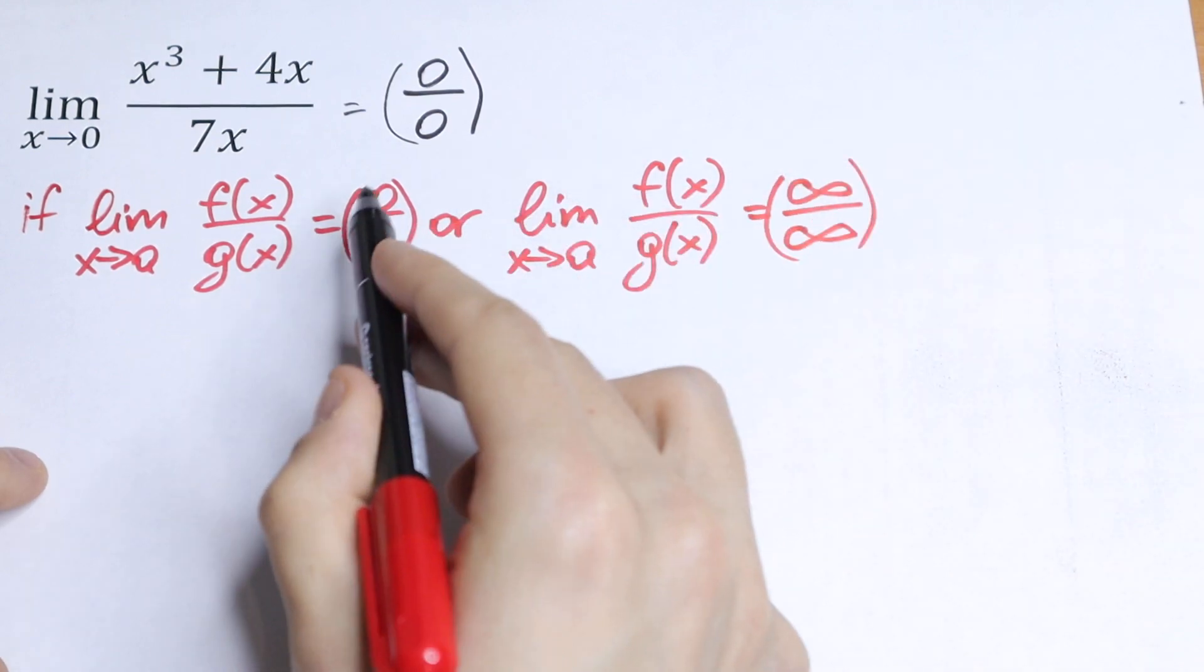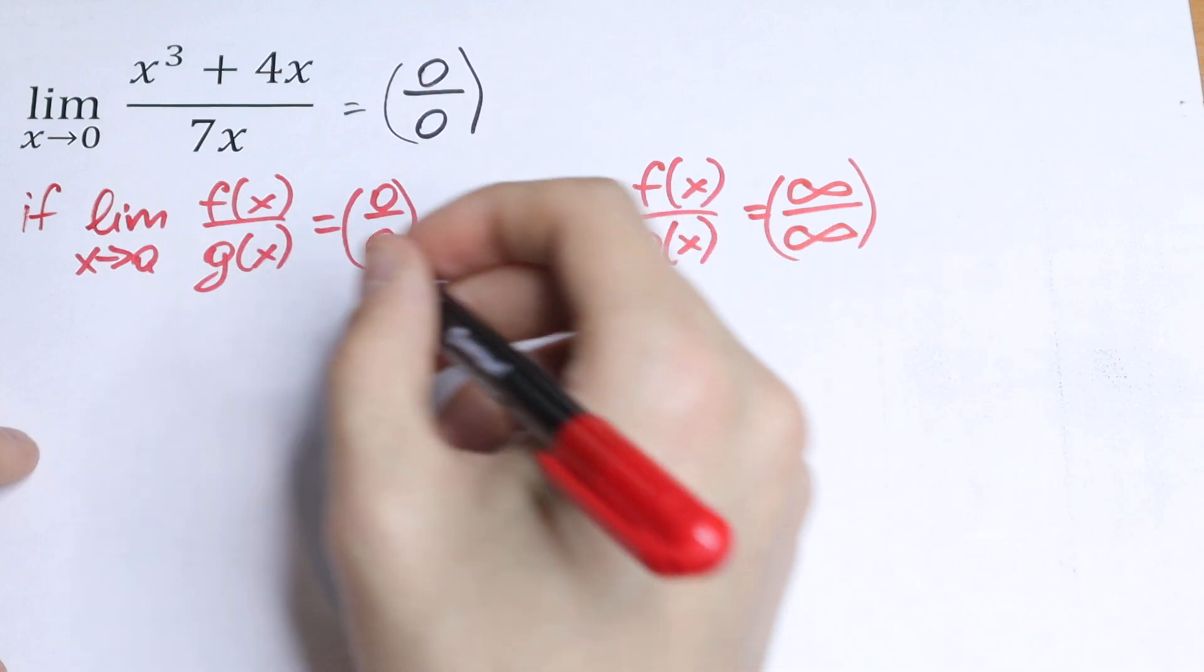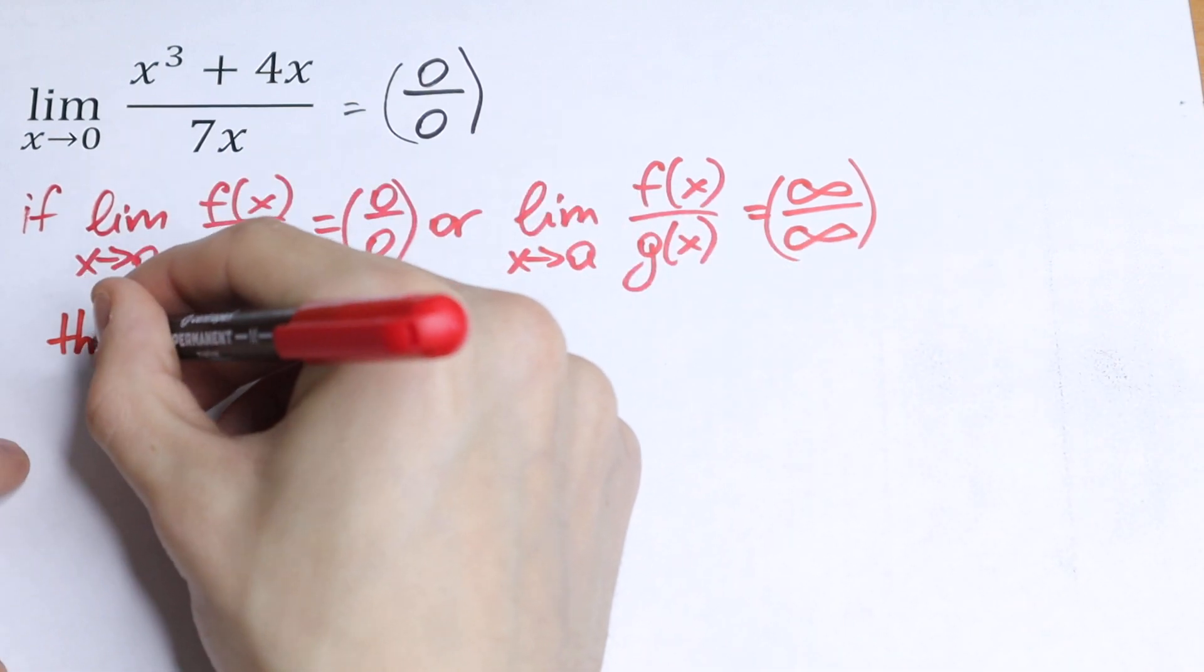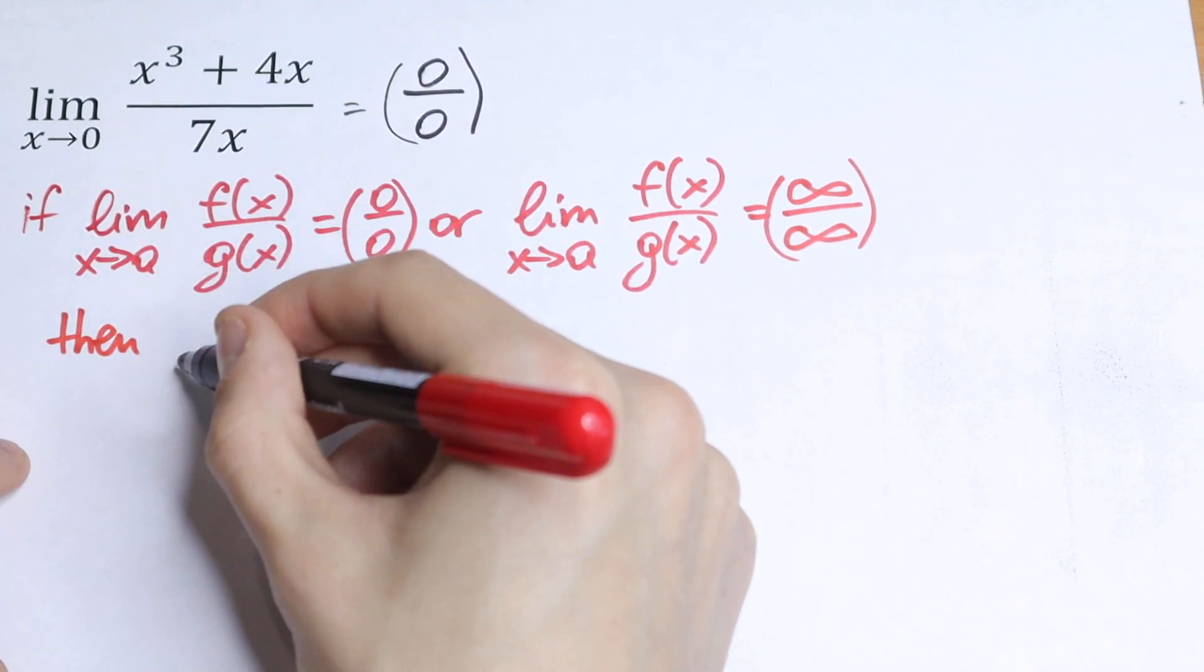Or this limit as x approaches to a of f of x over g of x will be equal to infinity over infinity. So two cases: 0 over 0 or infinity over infinity, then we can apply L'Hopital's rule.